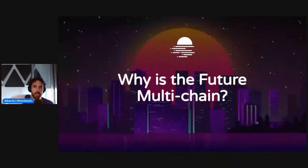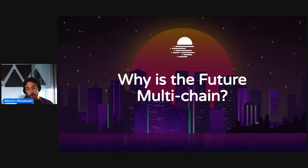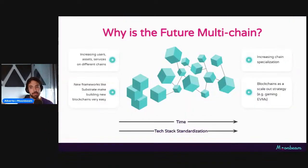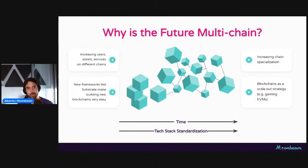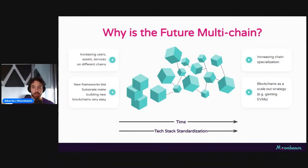Instead of just speaking about Moonbeam, let's talk about why the future is multi-chain and what Moonbeam's role will be. Technology has been standardizing — Substrate, which is what Moonbeam, Astar, Unique Network, and others are built on, allows you to build blockchains quite easily. In the past, building your own blockchain was really complicated. Now it's easy, there's an increasing number of assets, users, and services, and we're seeing the rise of app chains — blockchains that do one specific thing very well. The thesis is not if the future will be multi-chain, but when.